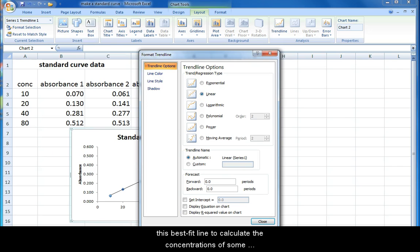Now select options. Because we're going to use this best fit line to calculate the concentrations of some unknowns, I would like to see the equation for this line on the graph. I also want to see how well this line fits, so I'm going to show the R squared values. And finally, I'm going to set the Y intercept to zero because a sample with no component A in it should have an absorbance of zero.